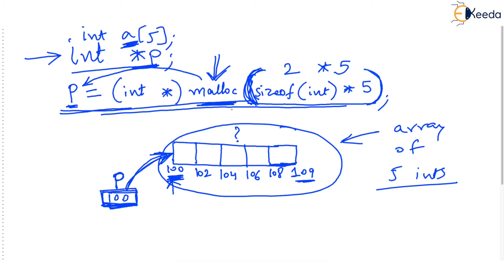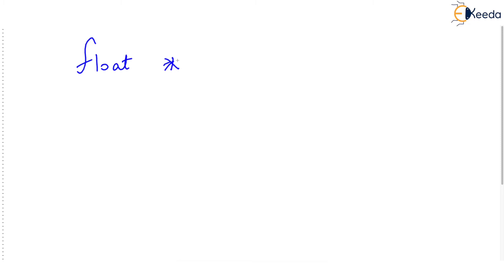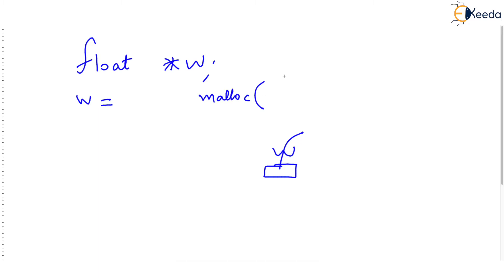What if you needed a float array? You declare a float pointer — let's say float pointer w. Now w can point to any float. What we can do is say: w, you point to newly allocated memory via malloc. But say we want an array of four floats. So what we will do is say: size of one float multiplied by four — that gives us that many repetitions of those floats we want.